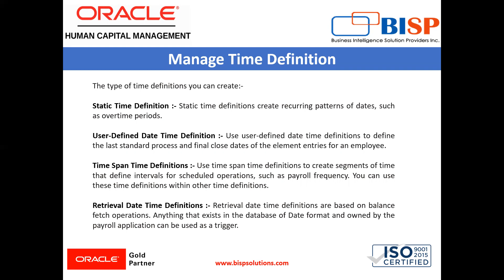For example, a company provides housing allowance to its employees and wants the allowance to end 30 days after the employee is terminated. You define a user defined date time definition based on the last standard earning date, which is the termination date plus 30 days.